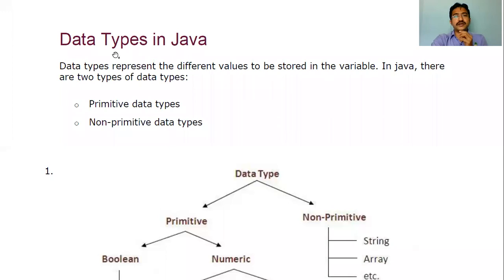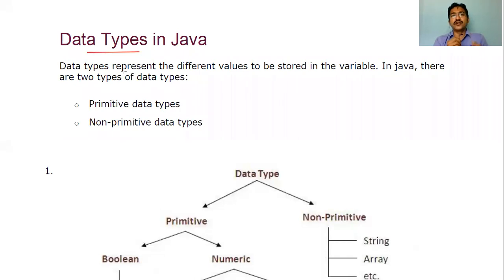Let me start today with another topic: data types in Java. Normally, data types in other programming languages, say for example in C, follow the same style in Java also. The type of data you are going to assign to a variable — that type of data is represented with the help of a data type. Simply, what type of value you are assigning to that variable is specified by the data type.